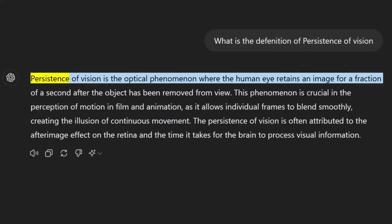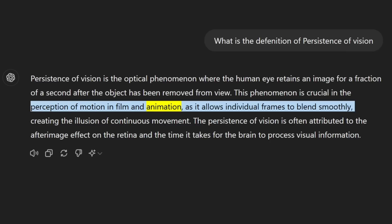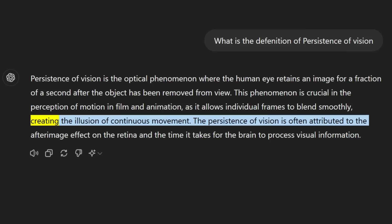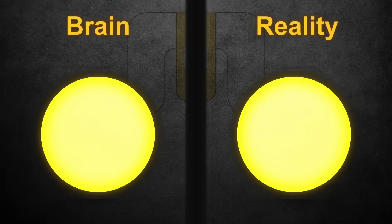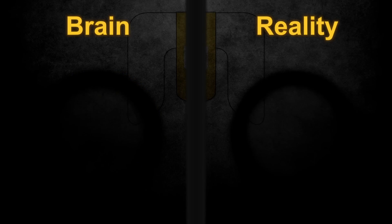To make a single strip of lights show a full image, we will take advantage of a nice property called persistence of vision. Persistence of vision is the optical phenomenon where the human eye retains an image for a fraction of a second after the object has been removed from view. This phenomenon is crucial in the perception of motion in film and animation. This property states that if the eye sees a light and then that light suddenly goes off, the brain will continue to interpret that there is a light for a short time after it goes off — for about 30 milliseconds.